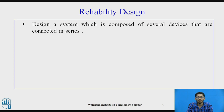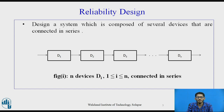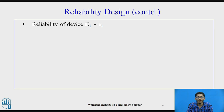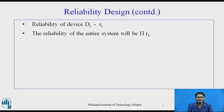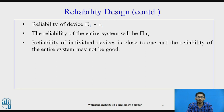We need to design a system which is composed of several devices connected in series. The devices d1, d2, d3 up to dn are connected in series, so we have n number of devices. Assuming the reliability of device di is ri, the reliability of the entire system will be the product of all ri's. The reliability of individual devices is generally close to 1, but the reliability of the entire system may not be good.